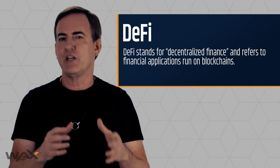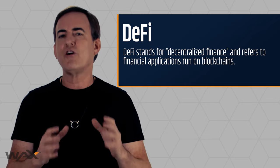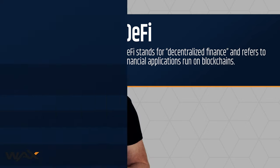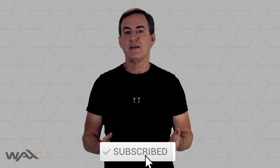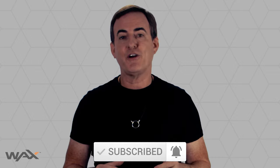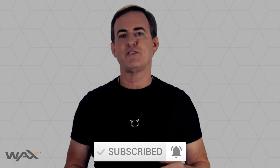Think of DeFi applications that allow on-chain collateralization and on-chain leverage as an early example of third generation utility tokens. Given the very positive market response to this evolution in utility token design, expect to see a lot more of these to come — and perhaps even a sneak peek at the dawn of fourth generation utility tokens before the year is up. If you like what you heard today, please hit subscribe and I'll see you next time.